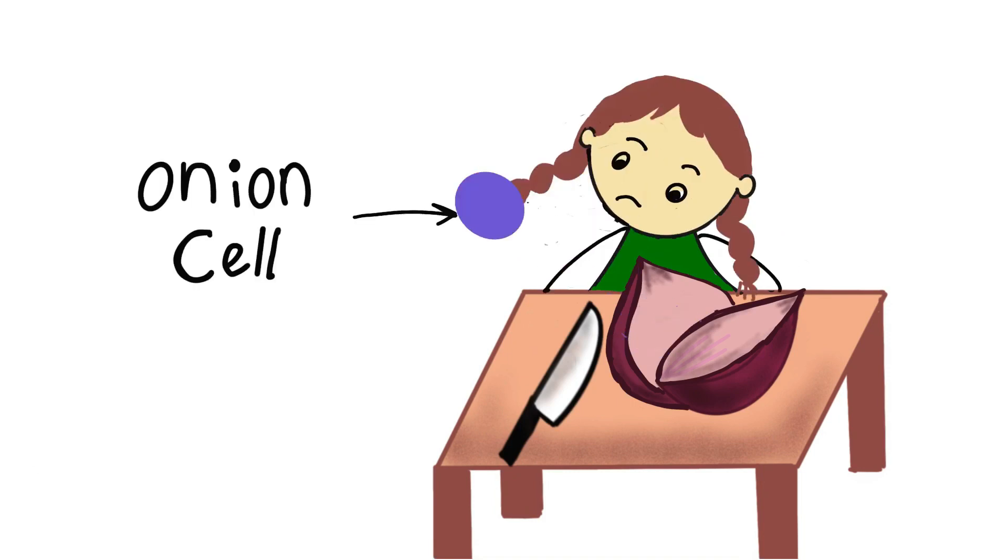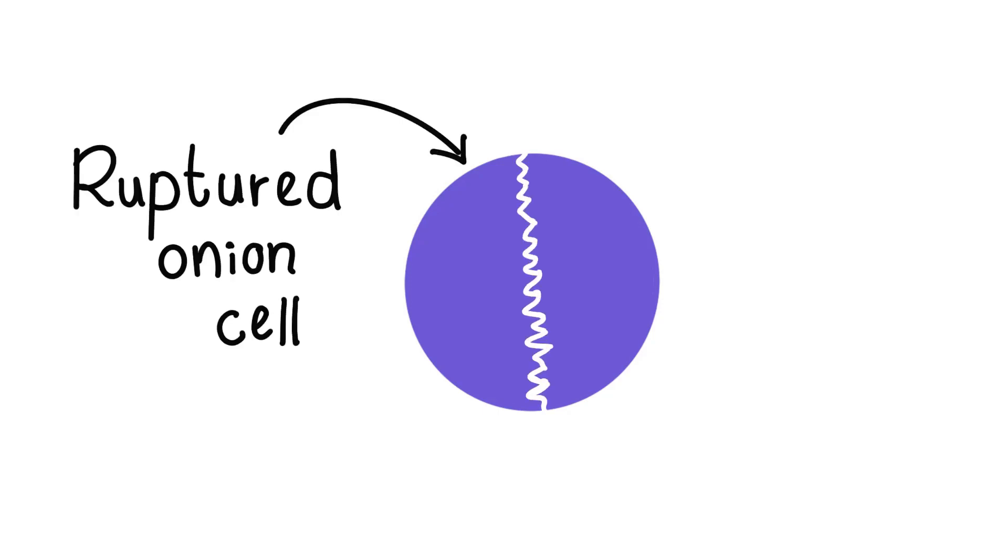When cutting onions, onion cells are ruptured. The ruptured onion cells cause to release the amino acid sulfoxide along with some special enzyme.